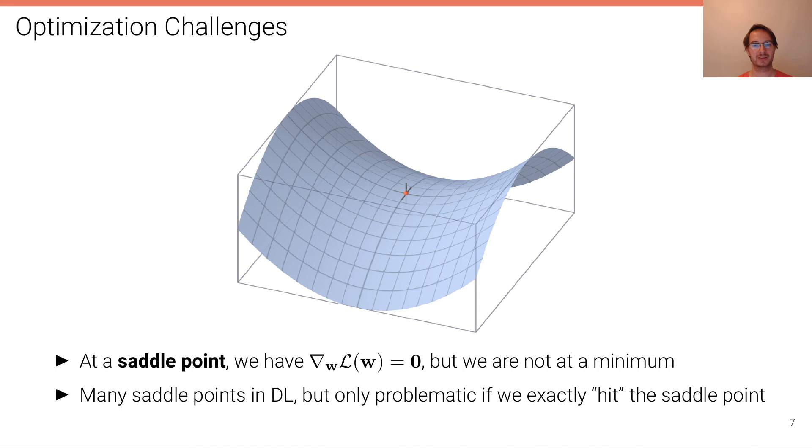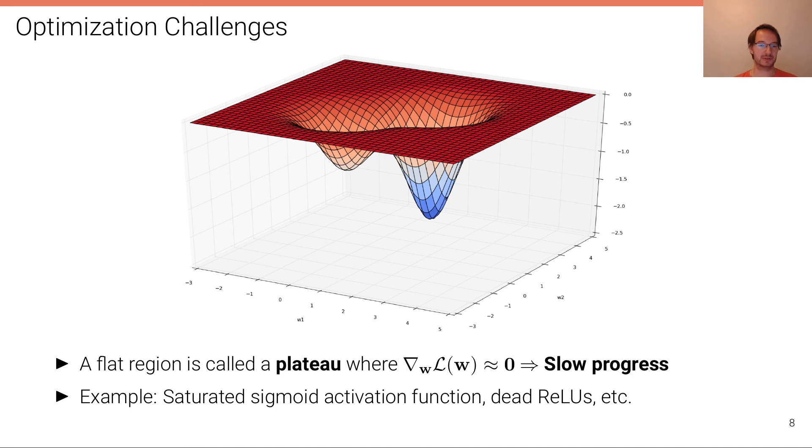At a minimum, if you think about a very large dimensional space, which is the parameter space with millions of dimensions, it's very unlikely that we have a point where the slope in any of these million dimensions is in the same direction, sloping upwards. It's much more likely that some directions slope downwards and some directions slope upwards. So saddle points occur a lot in deep learning, but they are really just problematic if we exactly hit the saddle point, and that's very unlikely. If we are slightly off that point, then as soon as we accumulate some more gradients, we'll start moving downwards again.